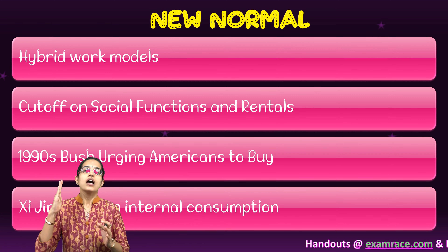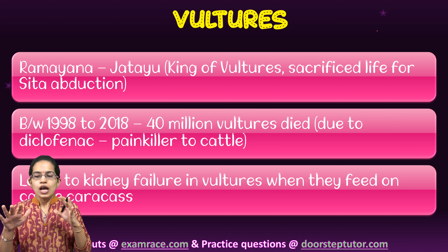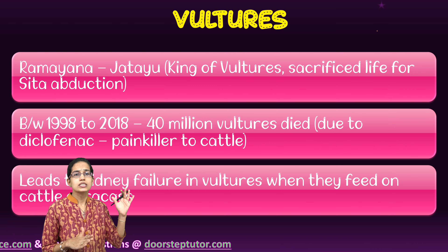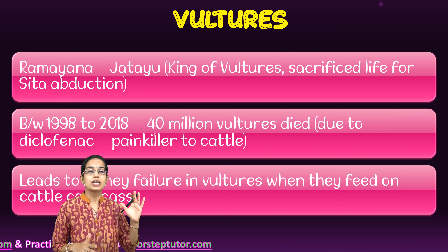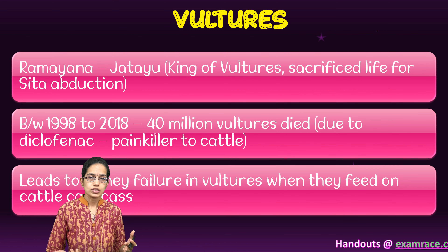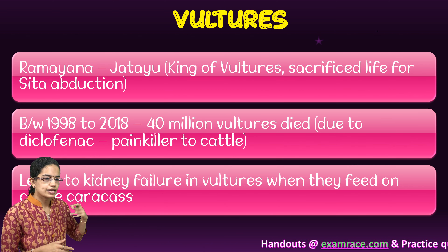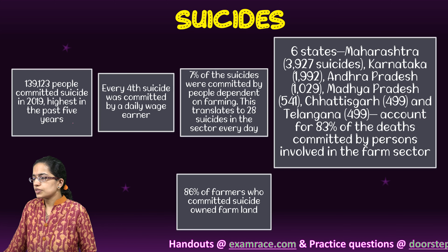The next important topic is vultures. Vultures have been part of India's history since ancient times — in the Ramayana, Jatayu, considered the king of vultures, sacrificed his life during the abduction of Sita. Vultures are an essential part of the ecosystem, but over the past 20 years nearly 40 million vultures have died due to a higher proportion of diclofenac found in cattle. When vultures consume cattle carcasses, the diclofenac causes kidney or renal failure, making their population decline significantly toward extinction.